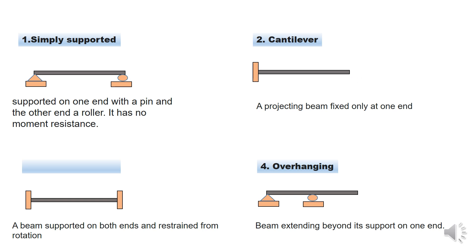Then for the fixed ended beam or fixed beam, it means that both ends are fixed. There is vertical restraint, horizontal restraint, and moment restraint, so there's no rotation on this kind of beam.